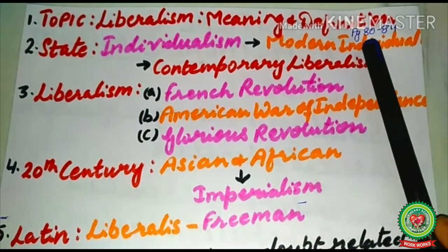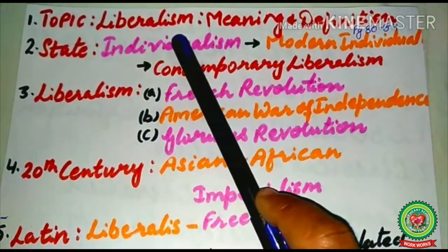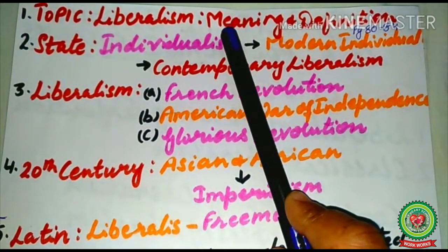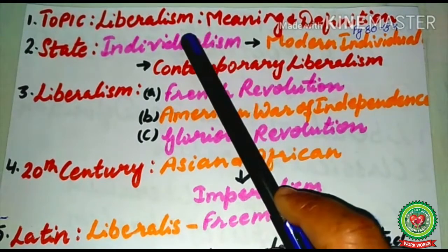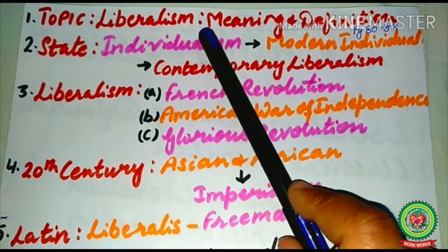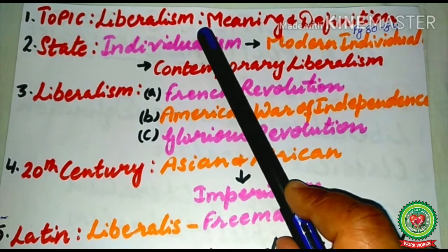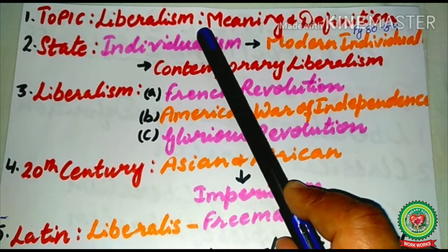Now I will discuss today's topic: liberalism — its meaning and definition. It is given on your chapter pages 80 to 84. Ever since the origin of the state, liberalism has been an ideology in all periods of history. Liberalism has been advocated as an ideology which stood for the rights, freedoms, and interests of individuals. It has been defined differently in different periods of history.